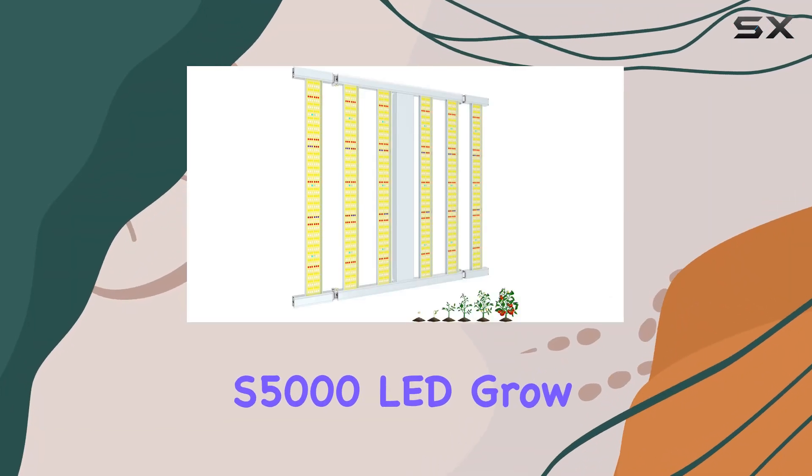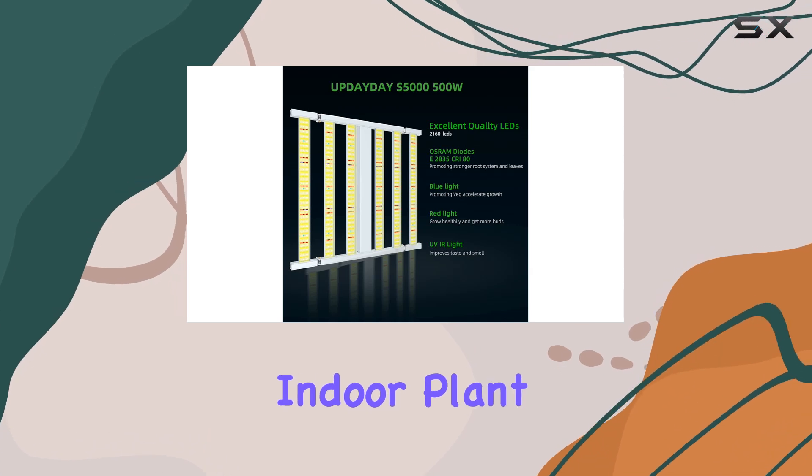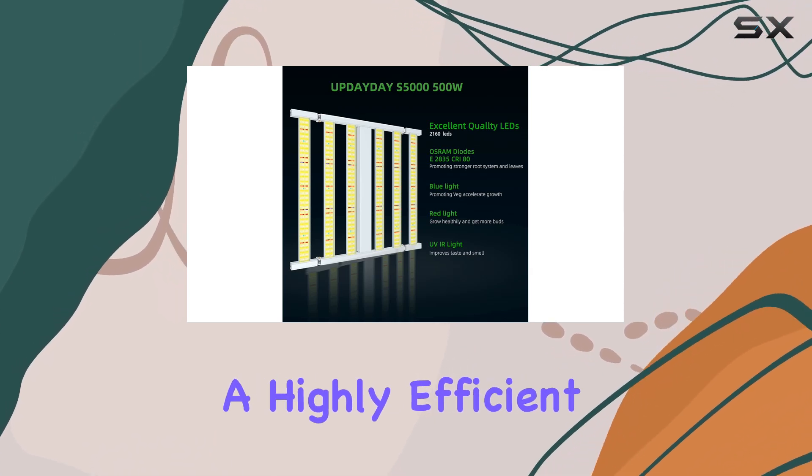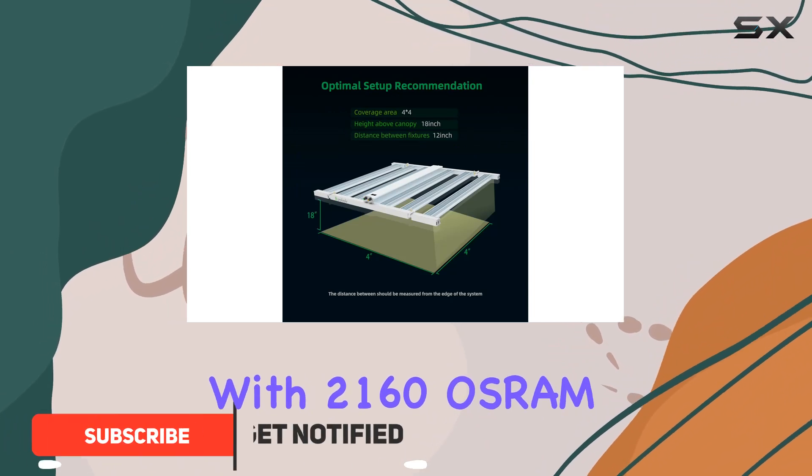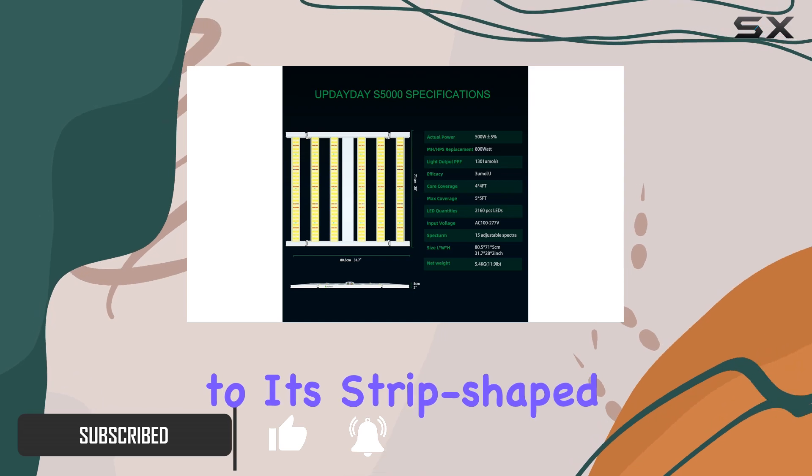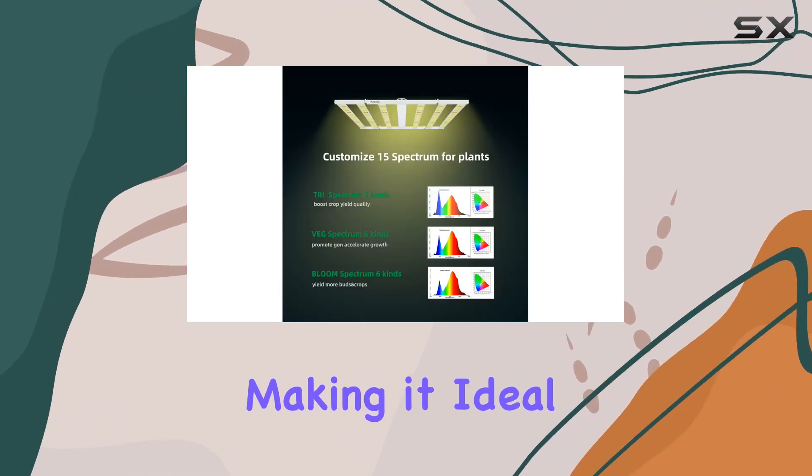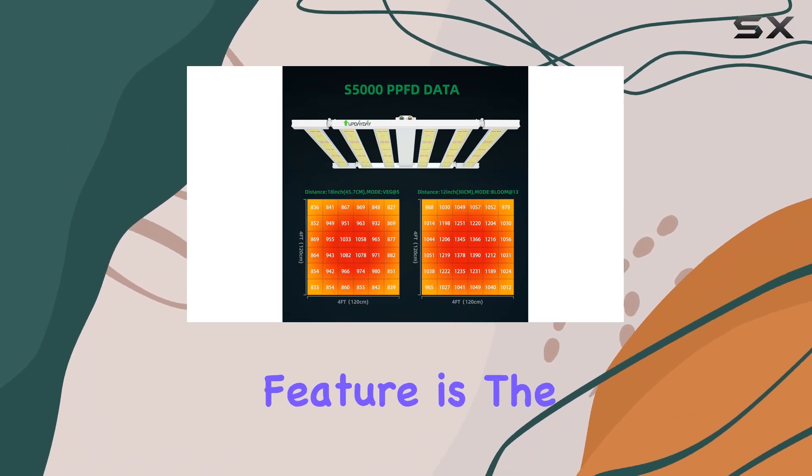The Updata S5000 LED grow light is a game changer when it comes to indoor plant growth, offering a highly efficient and customizable lighting solution. With 2,160 Osram diodes, this light provides exceptional coverage thanks to its strip-shaped light bar design, making it ideal for hydroponic setups, grow tents, or indoor rooms.